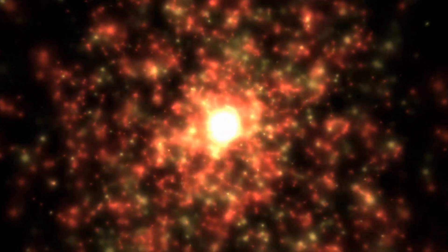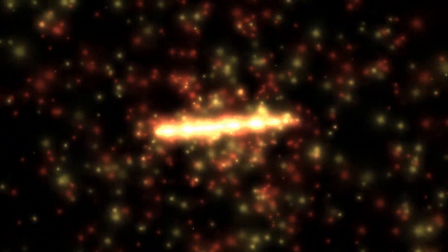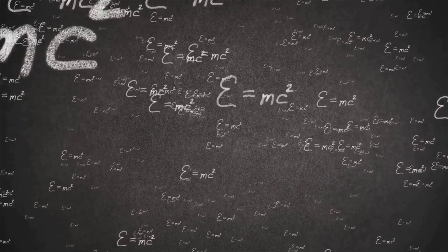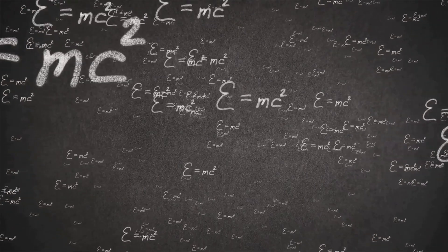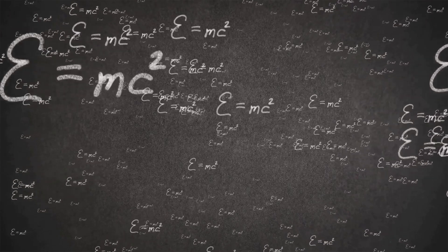Yet beneath the surface of this cosmic chaos lies a surprisingly simple principle that brings order to the apparent disorder. This principle governs everything from the motion of planets to the behavior of light, guiding the dance of celestial bodies. It's called the principle of least action, a cornerstone of physics that simplifies the complexities of the universe.